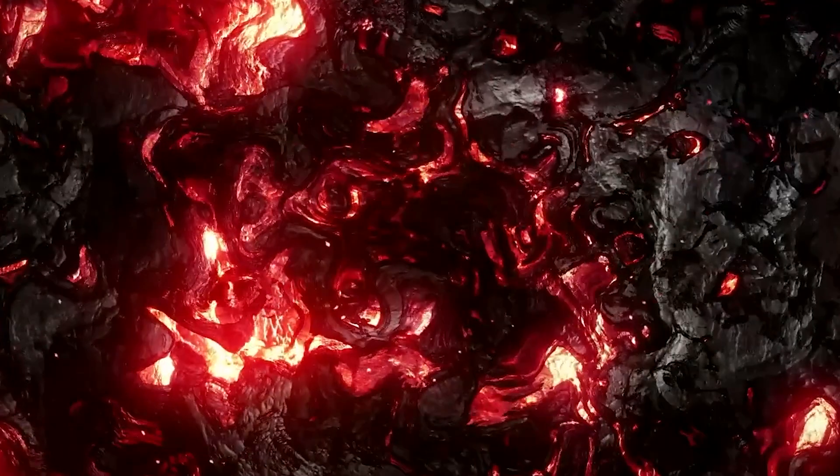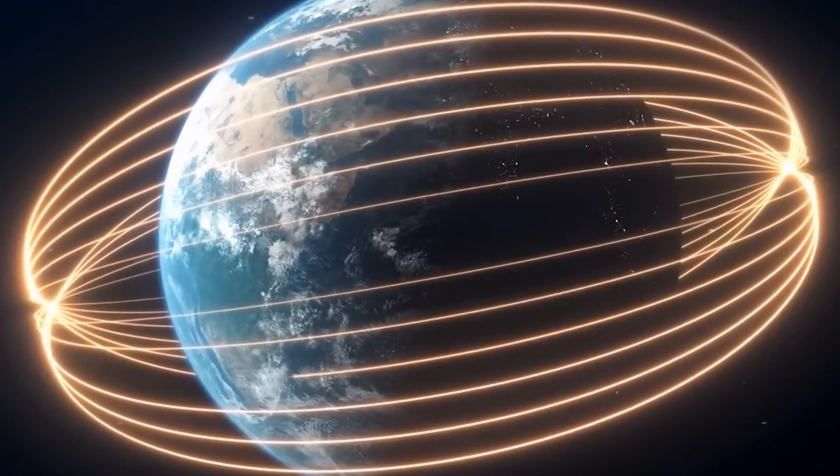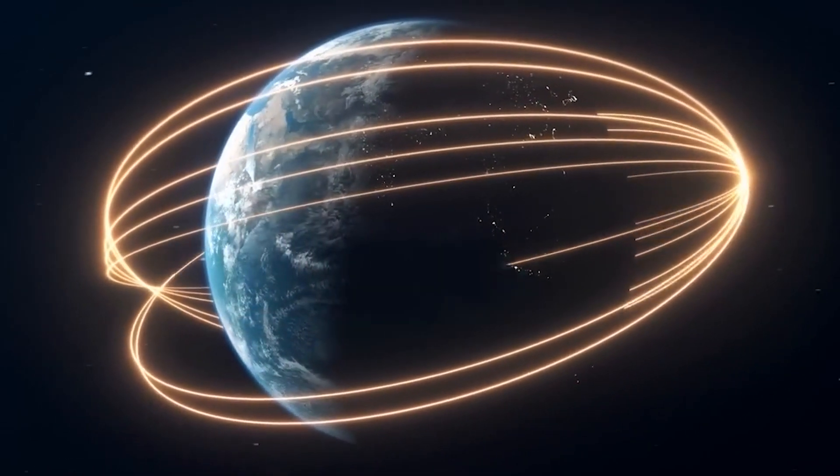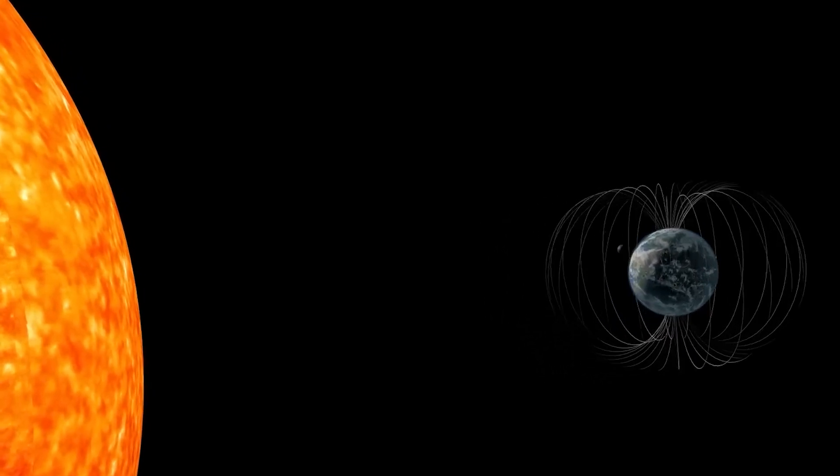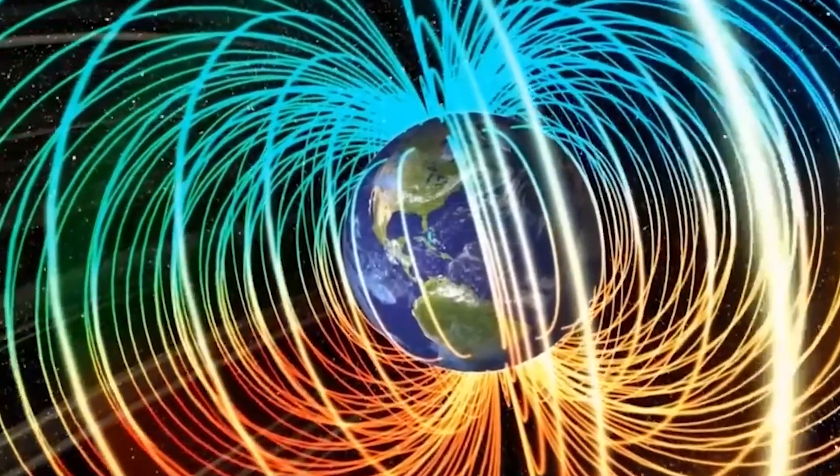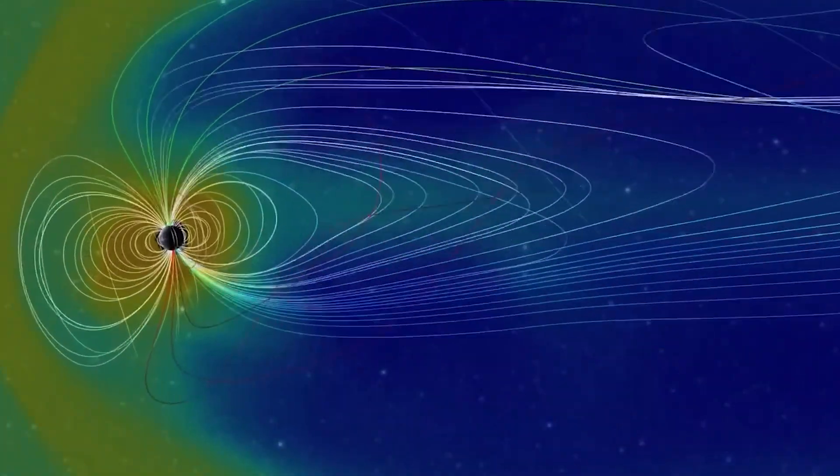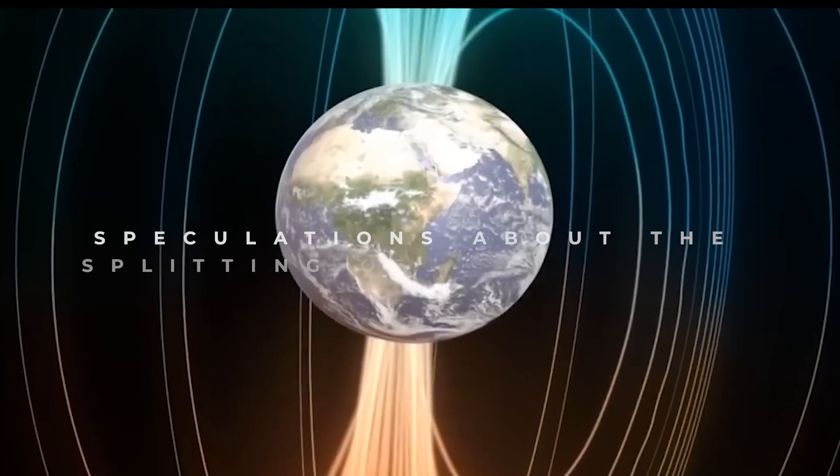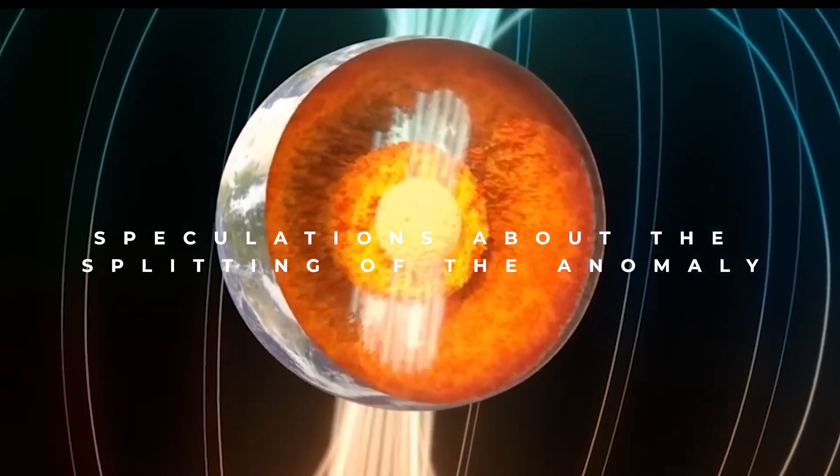And as it moves, it creates something pretty unique: an electrical current. This current is like a loop, constantly flowing and generating a magnetic field around the Earth. And here's the cool part. This magnetic field produces even more electrical currents, which create additional magnetic fields. It's like a never-ending cycle of electricity and magnets deep inside the Earth's core.